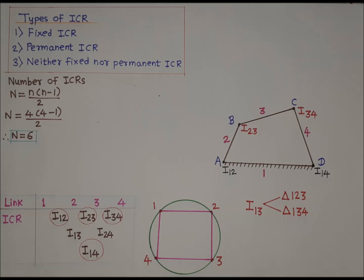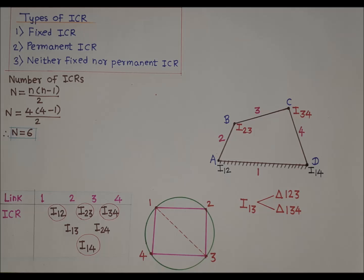You can notice that a line is not drawn between points one and three because i13 is not yet located, and no line is drawn between points two and four because i24 is not yet located. Now to locate ICR i13, in the circle diagram find two triangles with 13 as a common side. Those two triangles are triangle 123 and triangle 134, with numbers taken in ascending order. We will focus on triangle 123, which involves links one, two, and three.